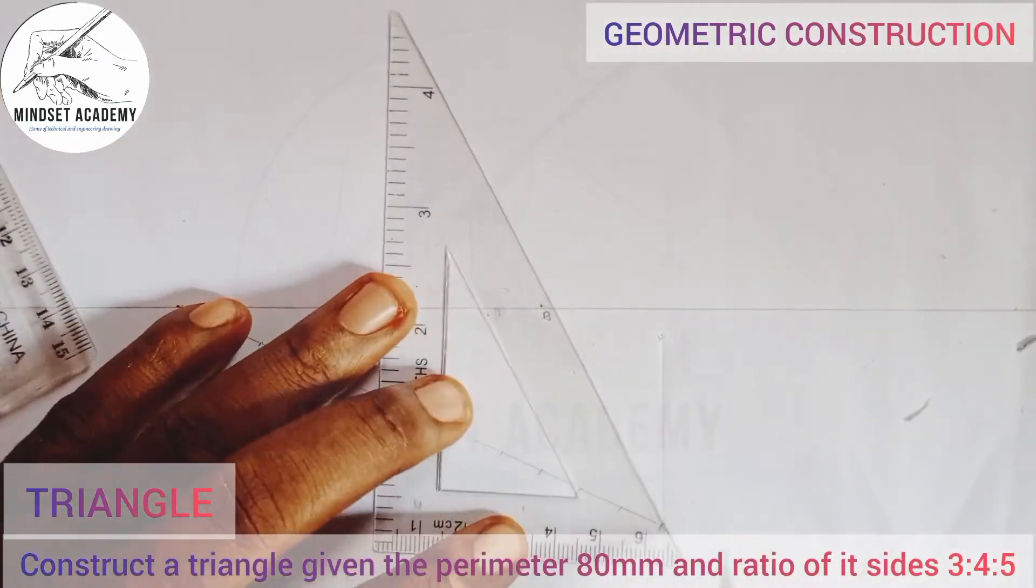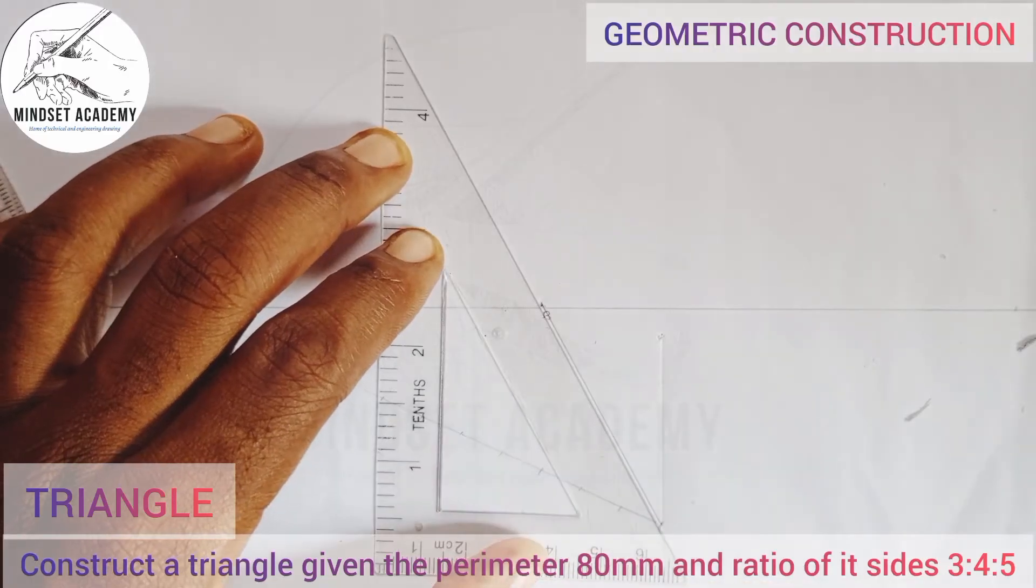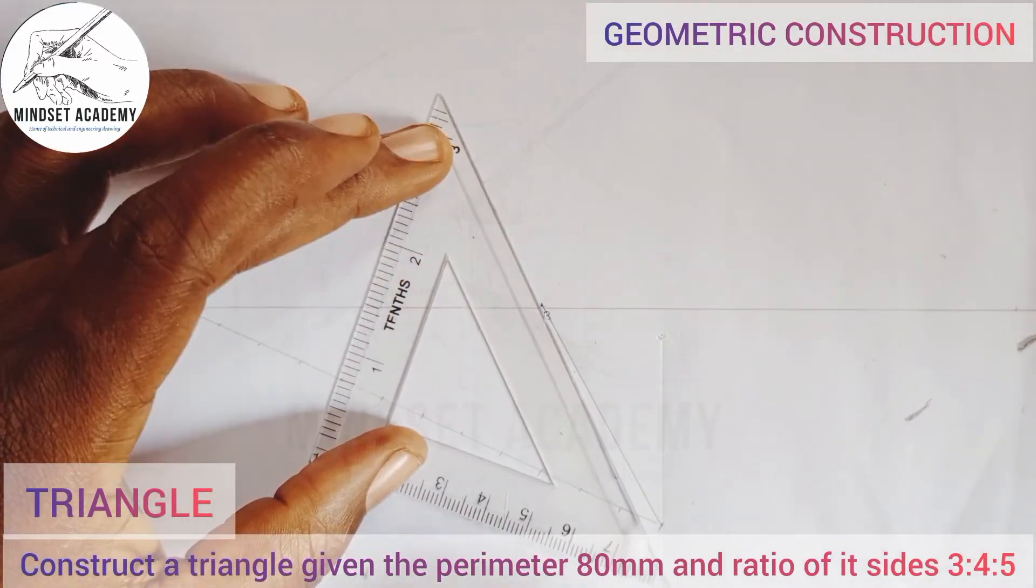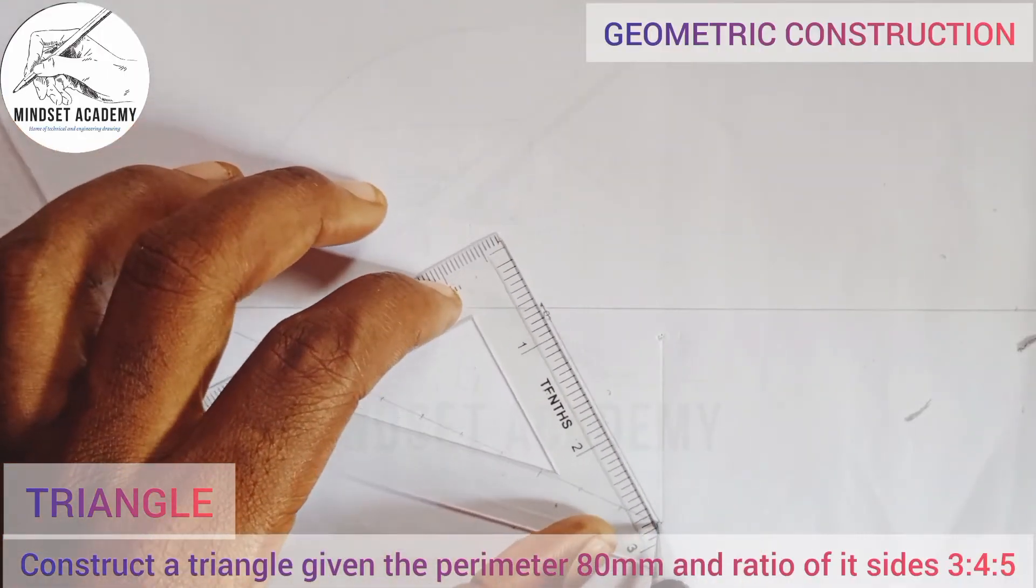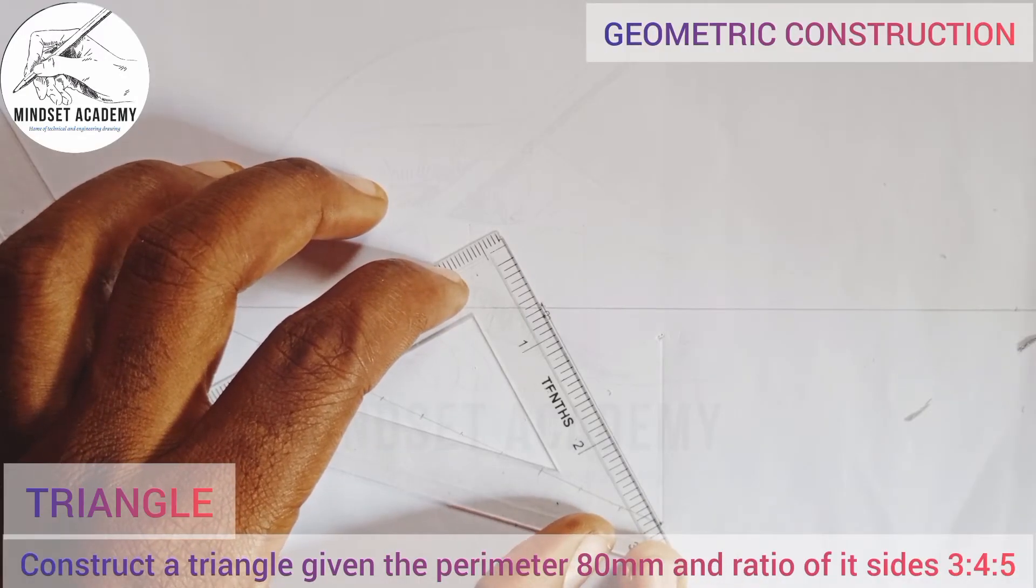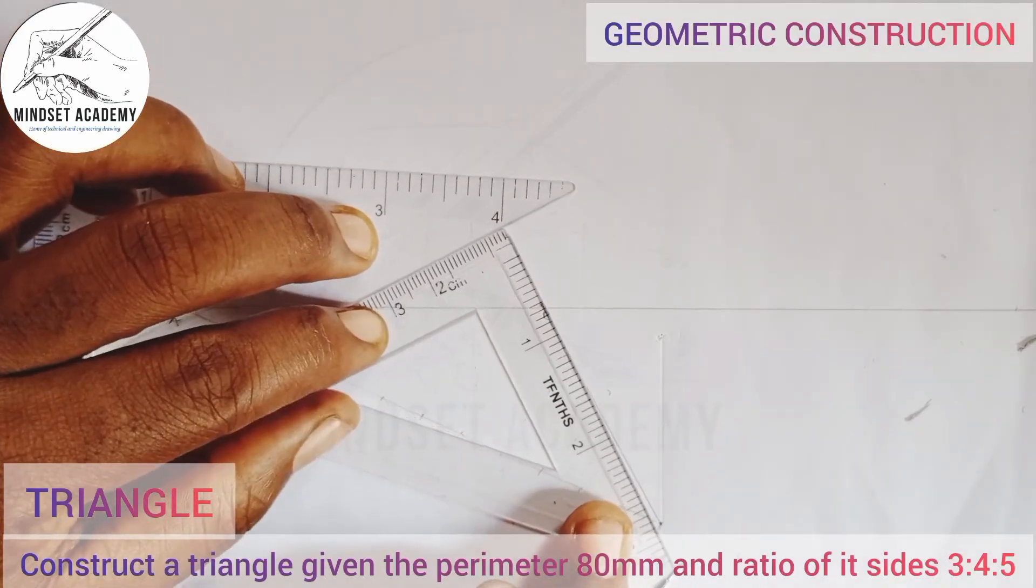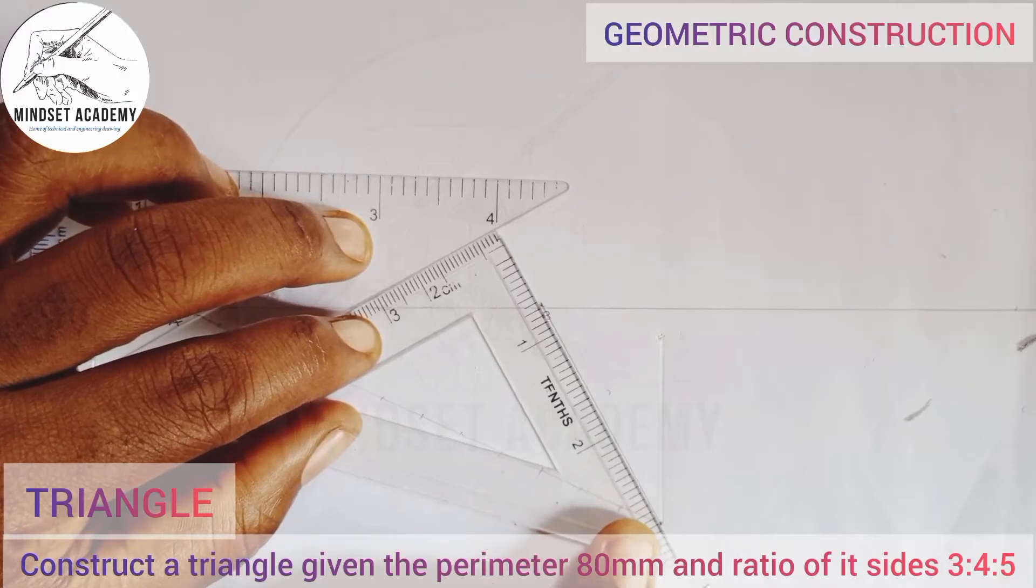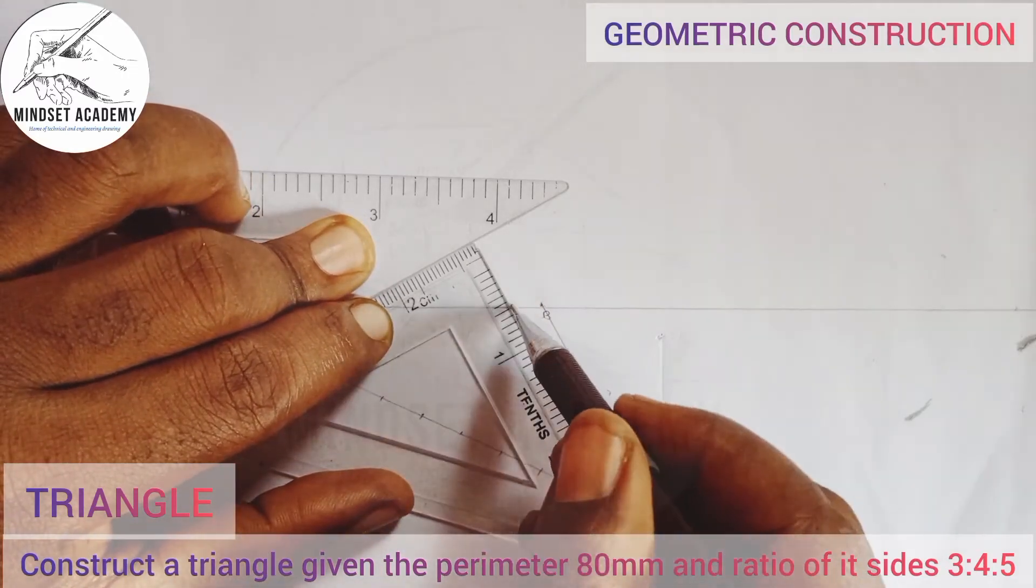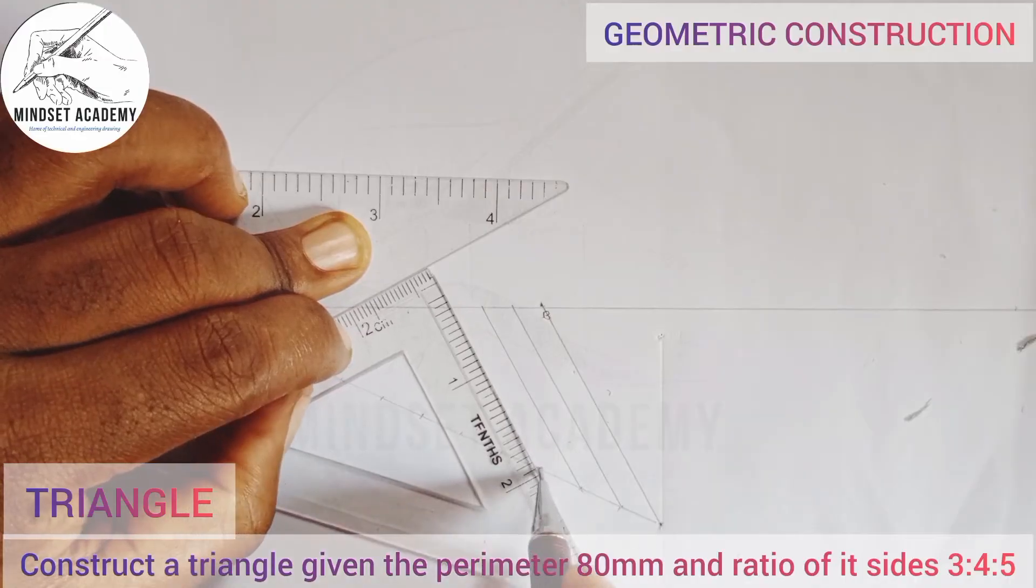Use the set square and join it this way. Ensure that it coincides with this point here. After you've ruled your line, take your ruler or the other set square. Start moving it to the next point to draw faint lines, then move to the next point and continue.